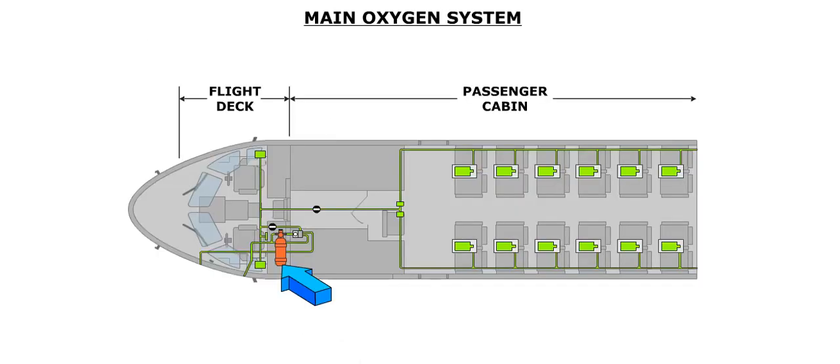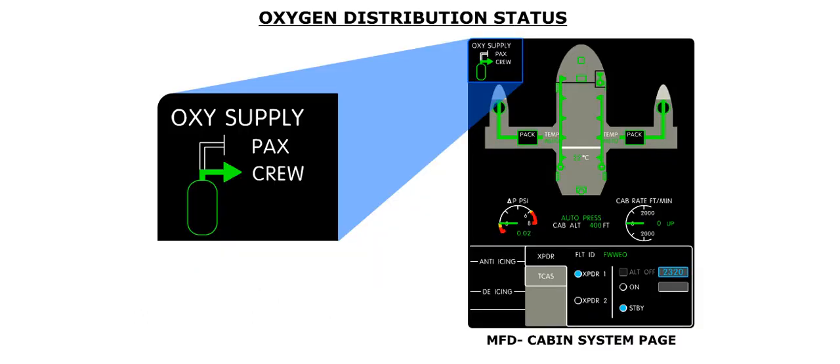A high-pressure cylinder supplies oxygen to the flight crew and the passenger cabin through a distribution system. The status of the oxygen distribution system is displayed in the top left-hand corner of the cabin system page.